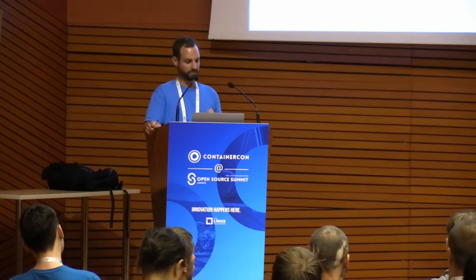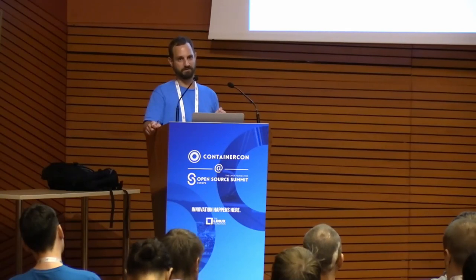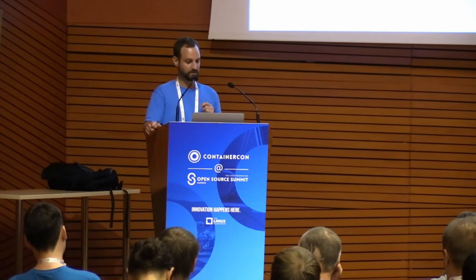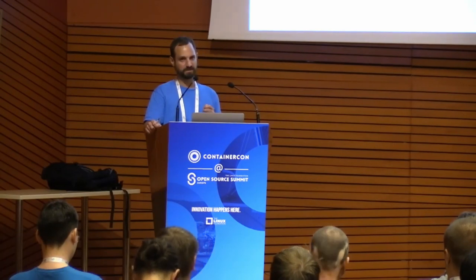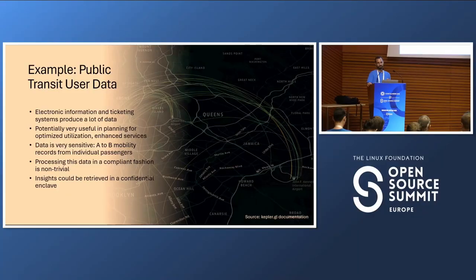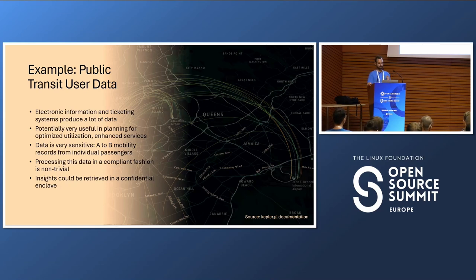For me personally, there's a concrete example from the mobility industry. In electronic ticketing and information systems, a huge amount of sensitive data is produced — A-B travel patterns from individual users. In Germany, this data is very hard to use due to privacy concerns, so it often sits in data lakes and gets purged. Confidential enclaves could be a way to leverage this data: performing joins on tables to extract insights without the deploying party having access to the underlying personal data.